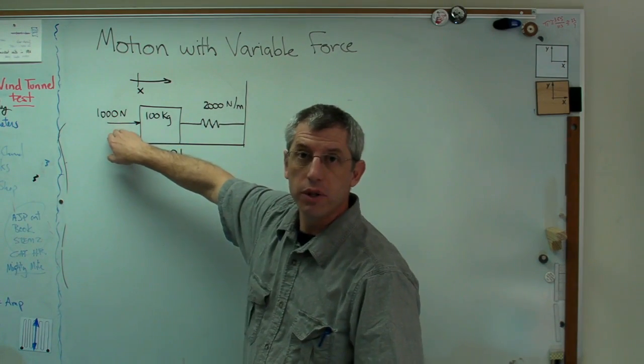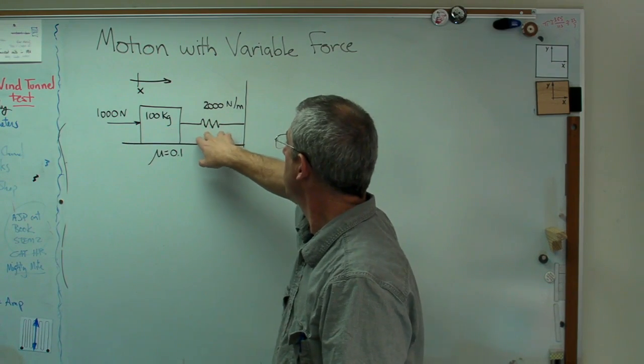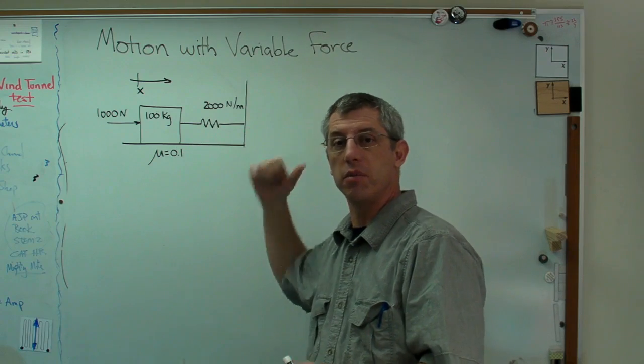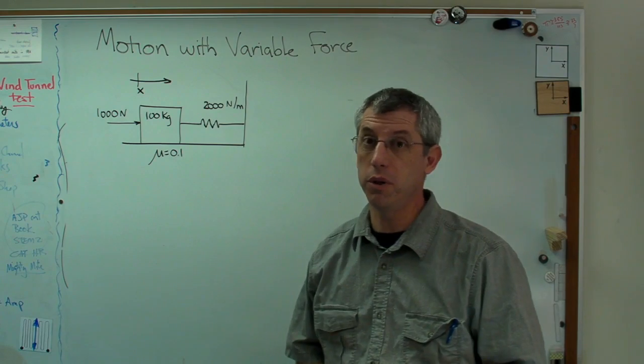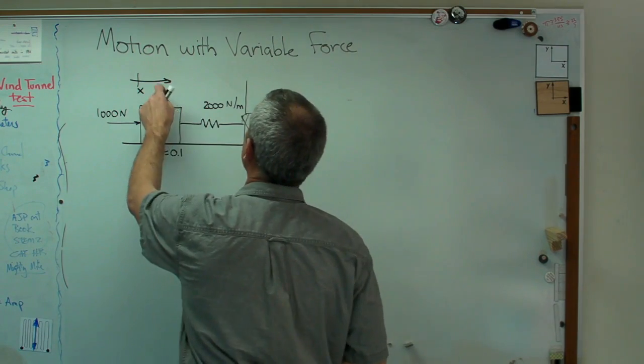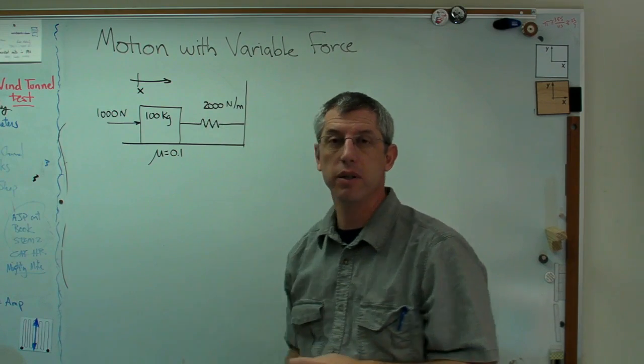We've got an external force that's constant and a block that weighs 100 kilograms here. I've got this spring here resisting the box's motion this way and a little bit of friction down here. Coefficient of friction of 0.1 is pretty low. And also I need to have a positive sign convention so I'm assuming x is positive that way.